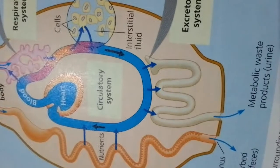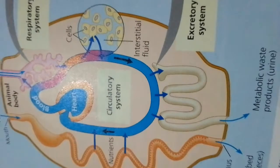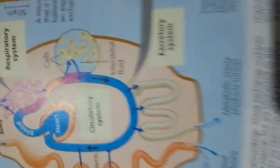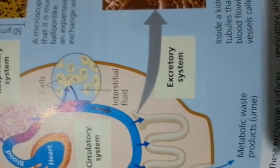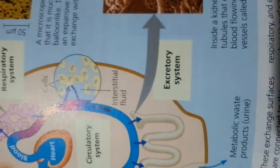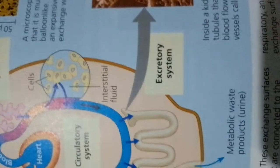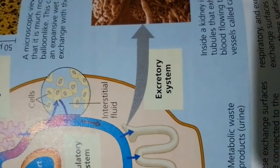A simple epithelium has a single layer of cells, whereas a stratified epithelium has multiple layers of cells. Pseudostratified epithelium is a single layer but appears stratified. Cell shapes at the exposed surface may be columnar — like bricks standing on end — or squamous, like floor tiles. Connective tissues follow.